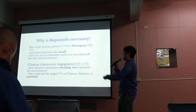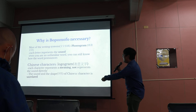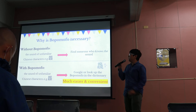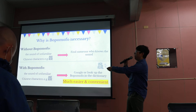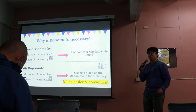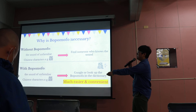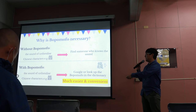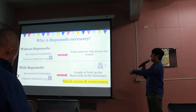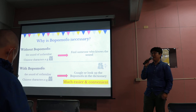Chinese characters are so-called logographs. That means each character represents a meaning, not representing the sound directly. So the sound and the shape of Chinese characters are unrelated. So if we don't learn Bopomofo, and I want to know the sound of all these unfamiliar Chinese characters, it's so complicated — I don't know. You would have to find someone who knows the sound, like a Chinese teacher or professor. However, you cannot always find a Chinese teacher by your side. So with Bopomofo, if you want to know the sound of an unfamiliar character, you just Google it or look it up in a dictionary. Here, that's what I found in Google. So now I know the sound of this character. With Bopomofo, it's much easier and more convenient for learning Chinese.